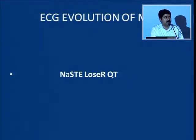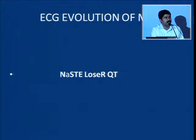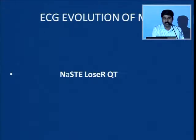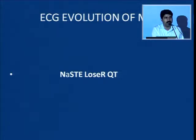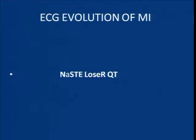A medicine post-graduate told me the mnemonic 'NASTY ELUSER QT' to show the ECG evolution of MI. N stands for the normal ECG, then ST elevation, then loss of R-wave, then Q-waves and T-wave inversions.